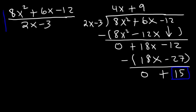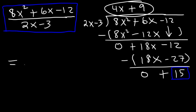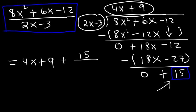So the answer: 8x squared plus 6x minus 12 divided by 2x minus 3 equals the quotient 4x plus 9, plus the remainder 15 divided by 2x minus 3.